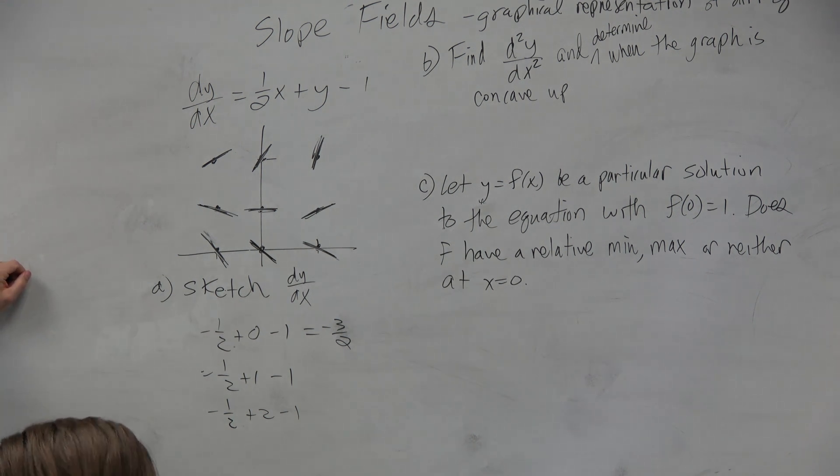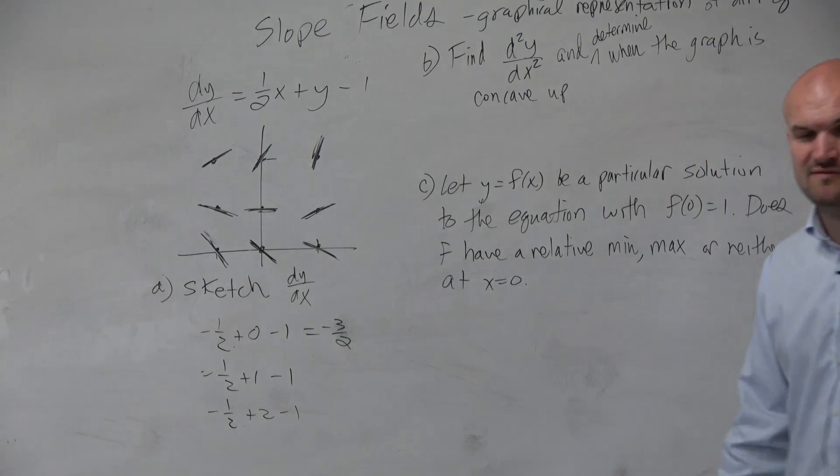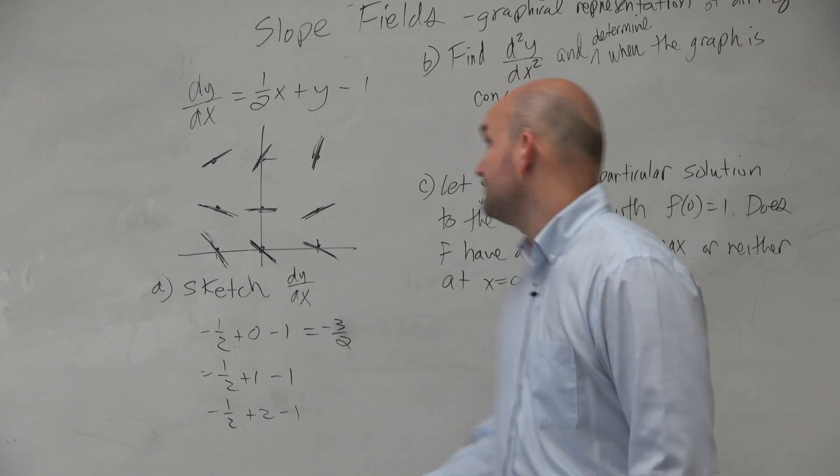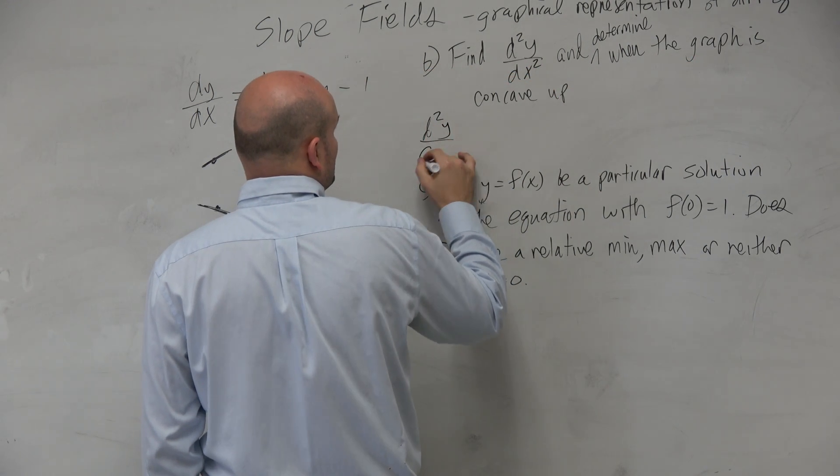The next one is finding the second derivative. So here's the first derivative. Now we've got to look at the second derivative. And then it says, and determine when the graph is concave up. And what do we know about when the graph is concave up based on the second derivative? When it's positive, right? So let's go and find the second derivative. So we can say d squared y over d...